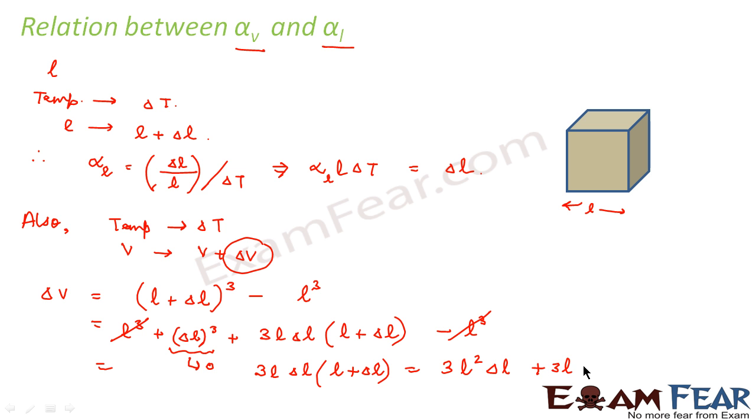Plus 3l times delta l whole square. Here again, this term can be approximated to zero because square of delta l will be very much negligible. So this is equal to 3l square delta l. So we saw that delta V comes out to be 3l square delta l.